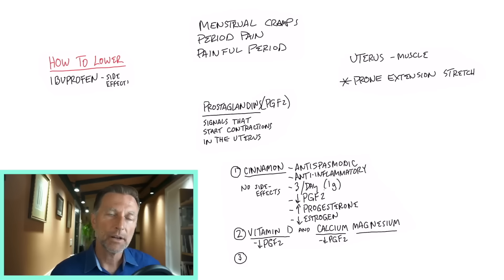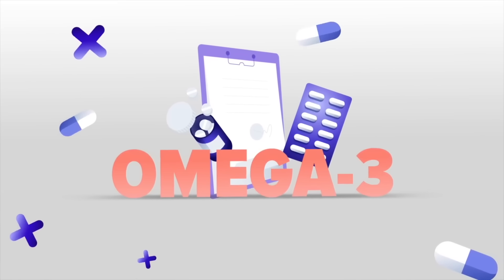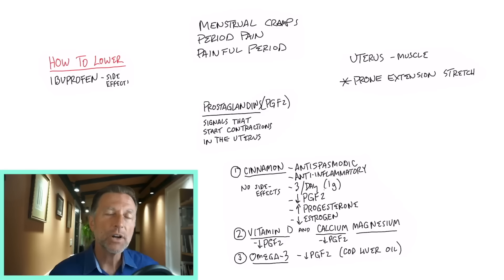And the third thing that might be very beneficial is omega-3 fatty acids in the form of cod liver oil. Omega-3 is a natural pain reliever, a natural anti-inflammatory. So now you have a very potent solution for menstrual cramps or period pain.